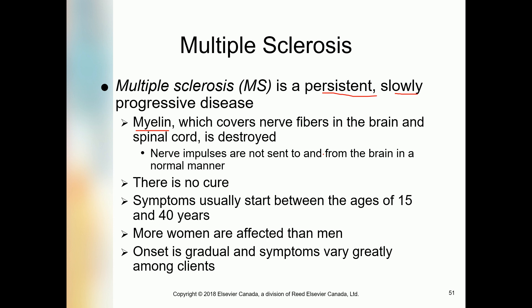Multiple sclerosis is a neurological disorder, abbreviated as MS. It is a constant, persistent, but slowly progressive disease. The myelin — a coating on our nerve fiber, also called the myelin sheath, which covers the nerve fiber in the brain and spinal cord — is destroyed.